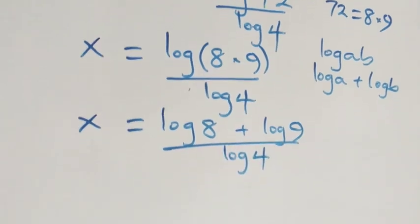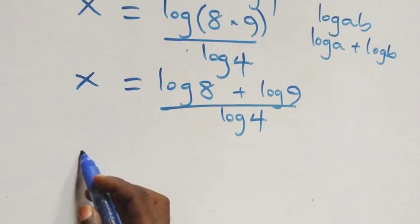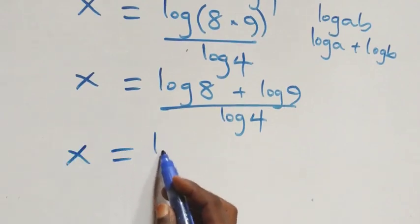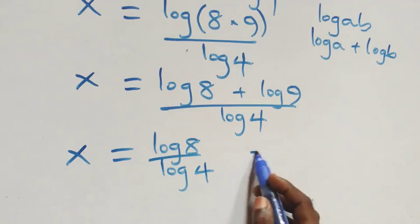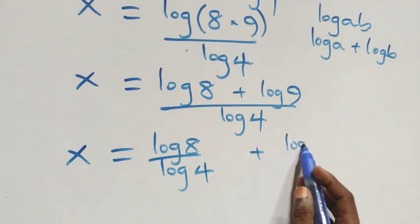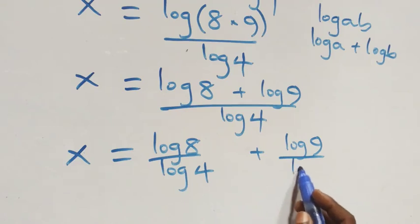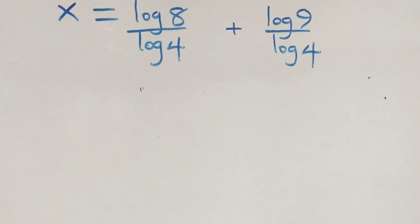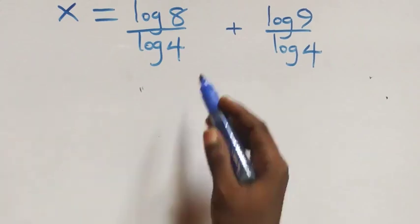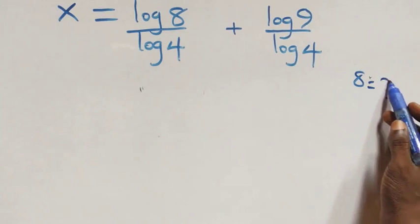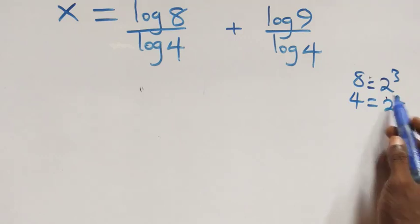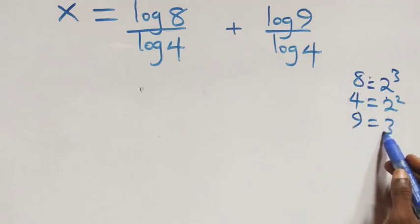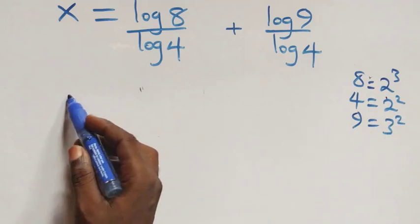From here we separate this into two fractions: x equals to log eight over log four plus log nine over log four. We can express eight as two times two times two, which is two raised to power three. Four as two times two, which is two squared. And nine as three times three, which is three squared.